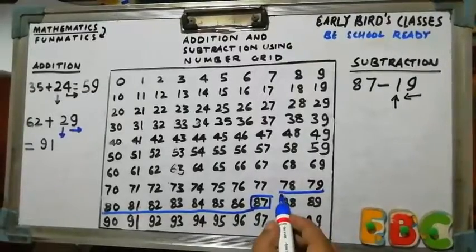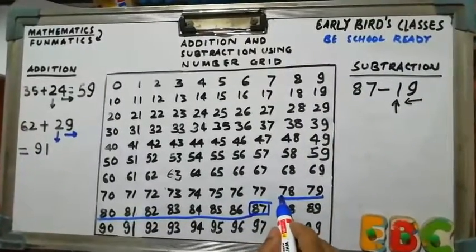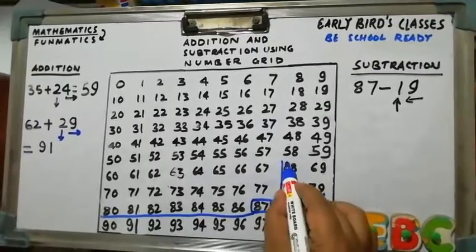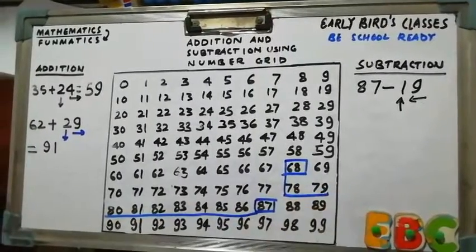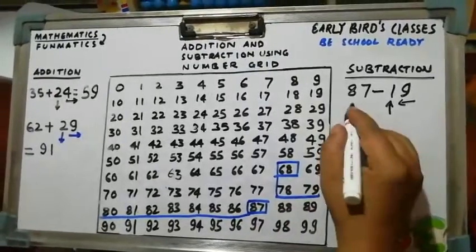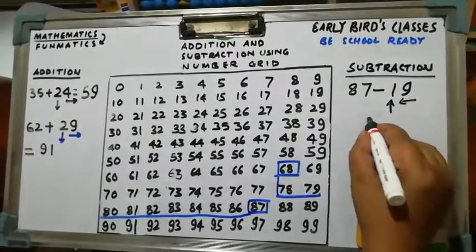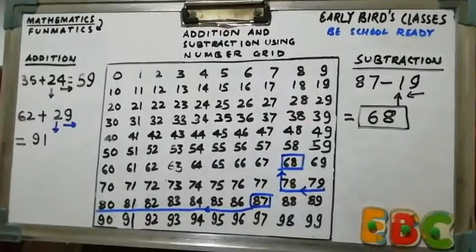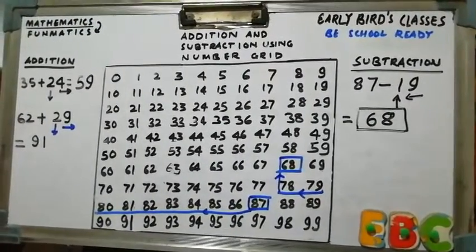Now we have to move one step up. So we reached at 68. So this is our result. 87 minus 19 is 68. Now take another example.